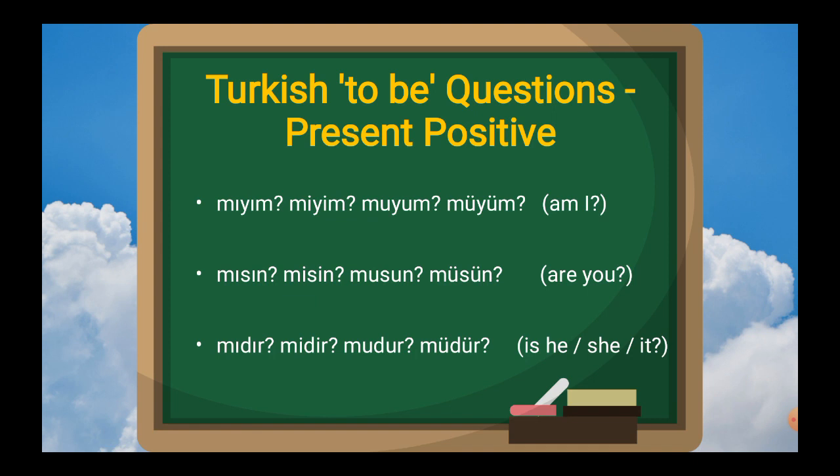For 'is he, she, or it?': dır, dir, dur, dür. That is: mı plus dır, mi plus dir, mu plus dur, mü plus dür.